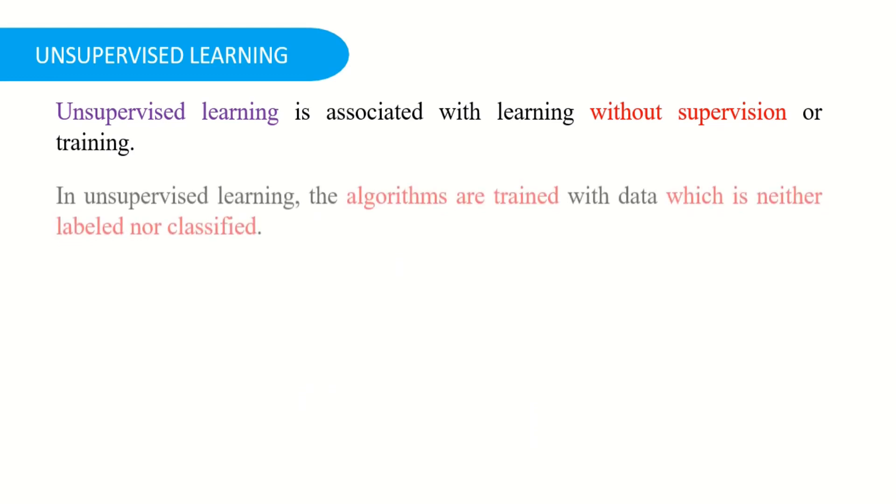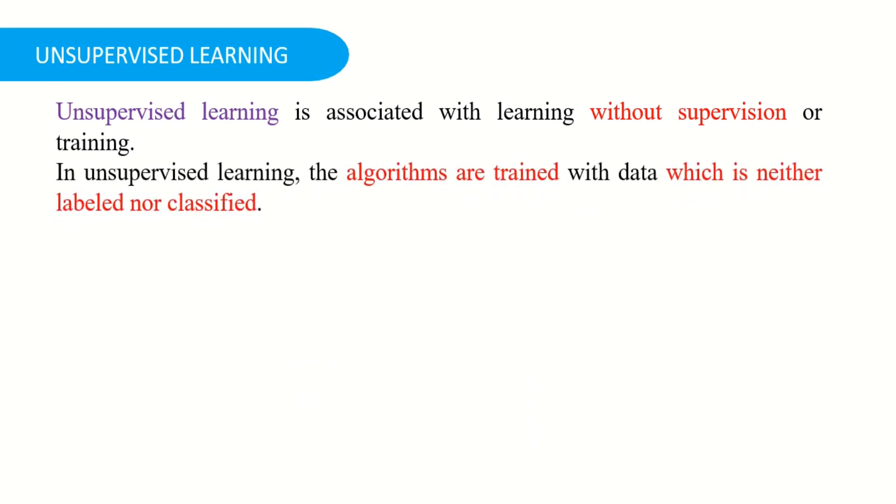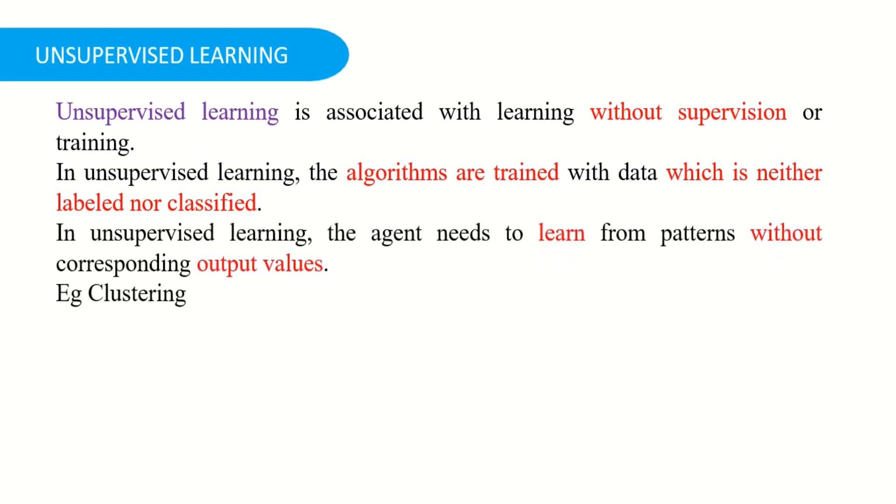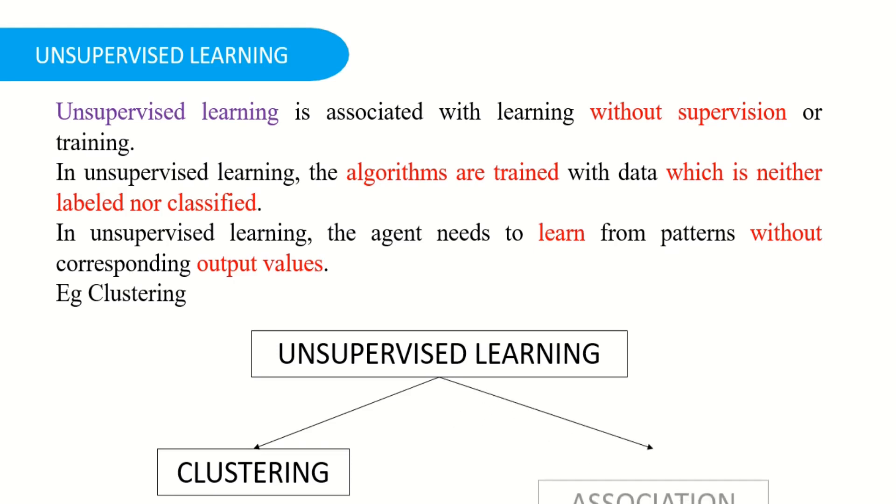Now, let's move into unsupervised learning. Unsupervised learning is associated with learning without supervision or training. In unsupervised learning, the algorithms are trained with data which is neither labeled or classified. In unsupervised learning, the agent needs to learn from the patterns without corresponding the output values. And the famous example under this is clustering or recommending a list. So unsupervised learning can also be broadly classified into two categories, that is clustering and association.